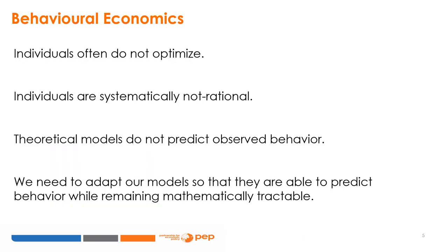It turns out that individuals often do not optimise. In fact, we tend to make systematic optimisation mistakes. The good news is that we are not completely self-interested and we do take into account our environment and people around us when we make decisions. The common agreement is that behavioural economics shows that individuals are systematically not rational. My opinion – and you can disagree with me without consequence – is that behavioural economics shows that our theoretical models are systematically wrong. The challenge is to adapt our models so they are able to predict behaviour while remaining mathematically tractable.